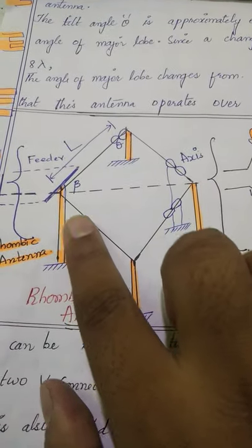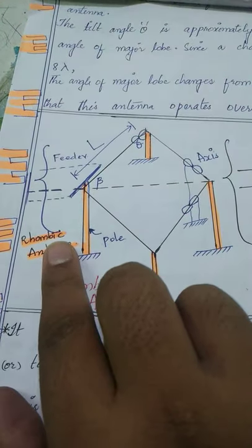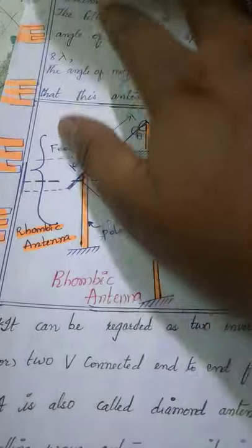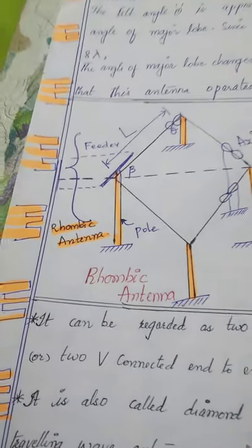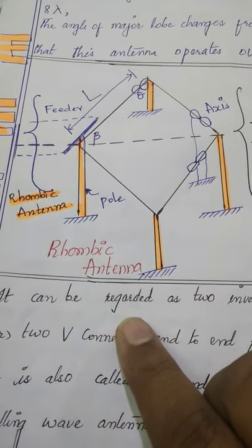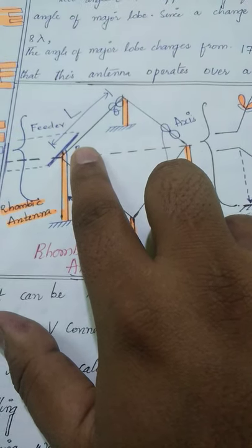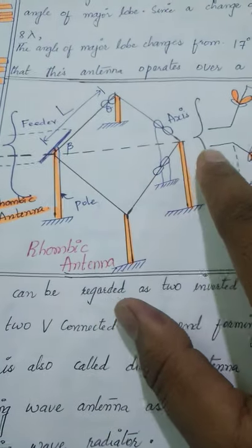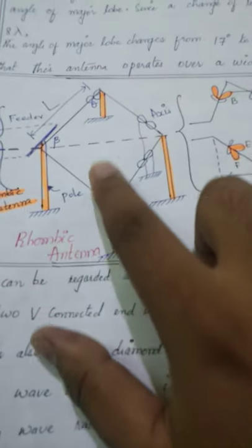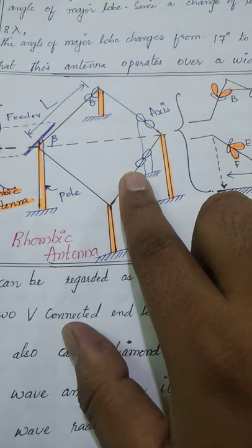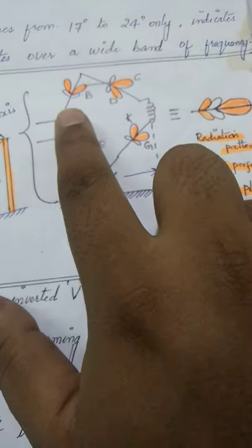As you can see over here in this particular diagram, this is the rhombic antenna where at the starting end, at the first end we will be considering the feeder point and at the second end we are getting the radiation pattern and the working of this rhombic antenna. In today's topic we are going to discuss the pole, the feeder point from where it is going to give the feeding to the rhombic antenna. If we join all these four kinds of poles, we are going to make one diamond shape or rhombic antenna shape. In this, we are going to see its radiation pattern and how it is going to look like.